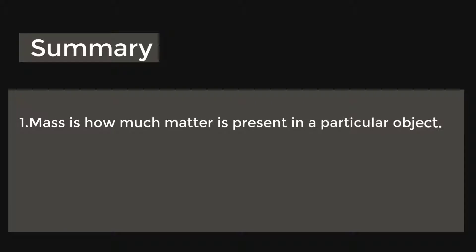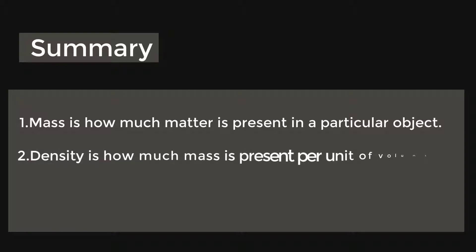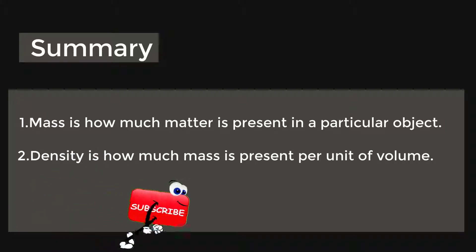Summary. Mass is how much matter is present in a particular object. Density is how much mass is present per unit of volume.